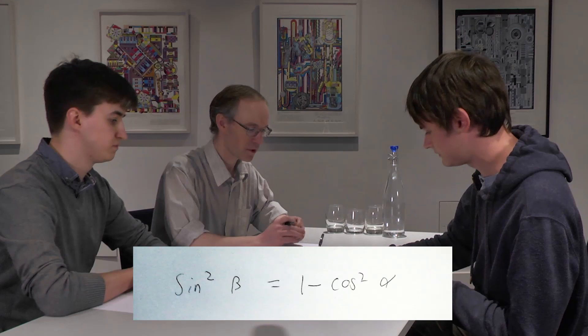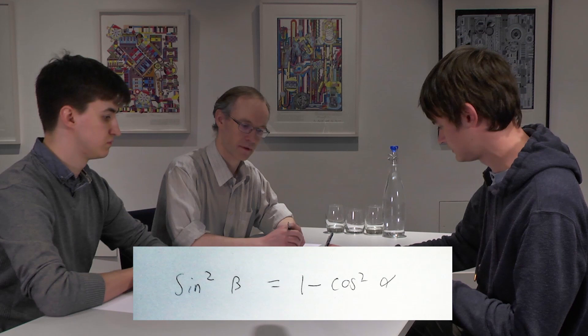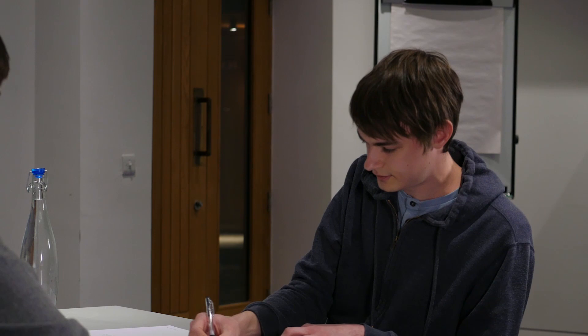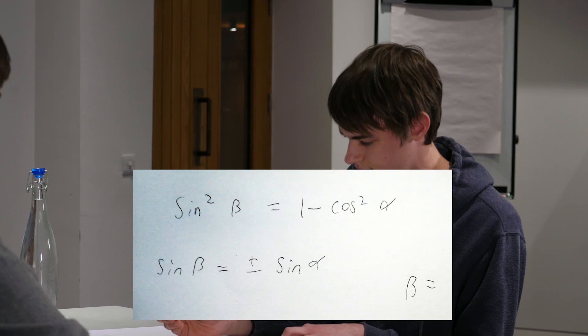Would you like to keep track of your equations here? Yes — so sin squared beta equals 1 minus cos squared alpha, which means that sin beta has got to be plus or minus sin alpha.